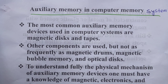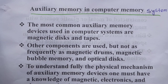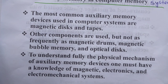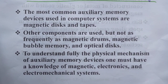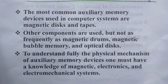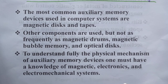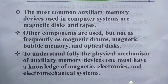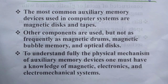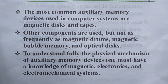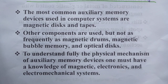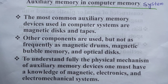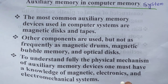Magnetic drums, magnetic bubbles, and similar devices are sometimes involved in a computer system. To fully understand the physical mechanism of auxiliary memory devices, one must have knowledge of magnetic electronics and electromechanical systems, because magnetic disks or tapes use a physical mechanism to create auxiliary memory. You need to understand how data is embedded into the disk.